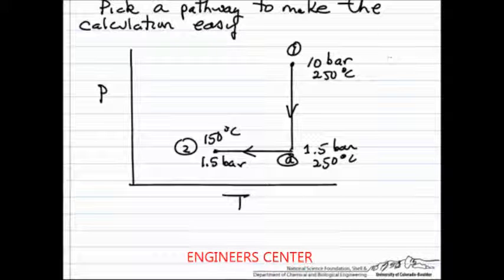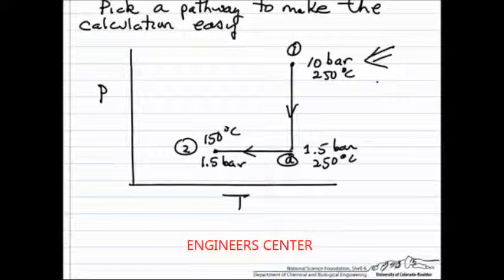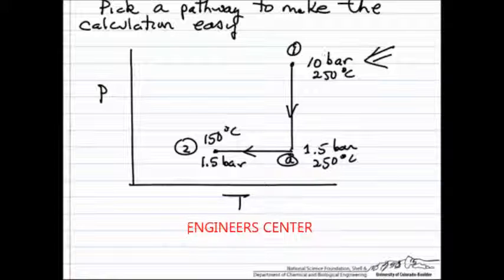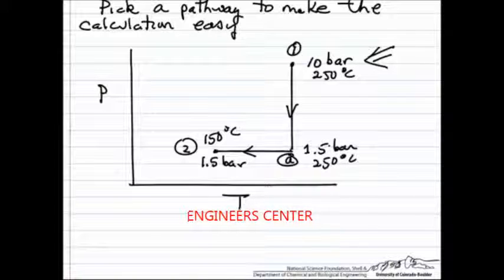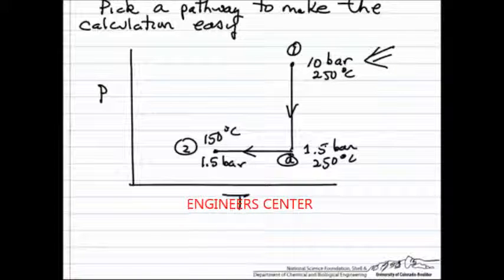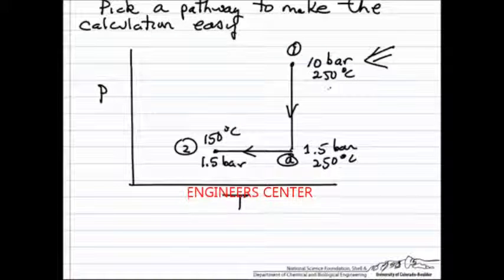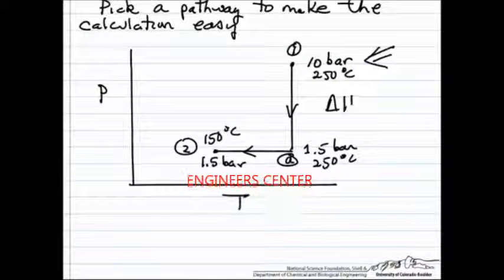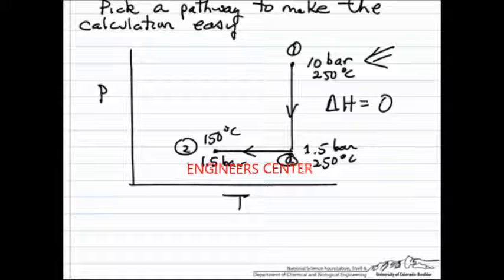So point 1, our starting point, 10 bar and 250°C, we are first going to make a change at constant temperature. We'll go from 10 bar to 1.5 bar. At constant temperature, because it's an ideal gas, ΔH is going to be 0 for this step.